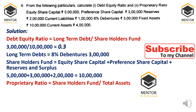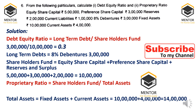The next ratio is proprietary ratio. The formula of proprietary ratio is shareholders fund divided by total assets. This represents what percentage of shareholders fund makes up the total assets of the firm — a very important ratio for financial decision making. Total assets equals fixed assets plus current assets: fixed assets given are 10 lakhs and current assets 4 lakhs, so 14 lakhs is the total assets.